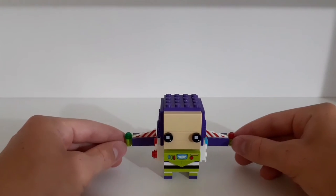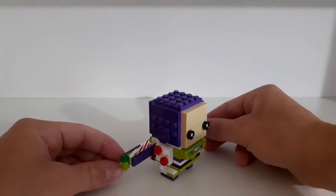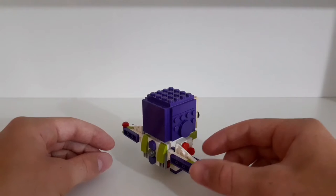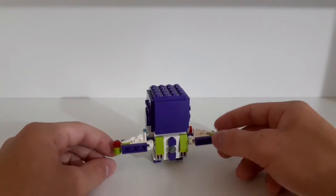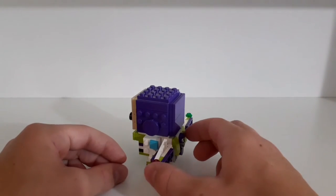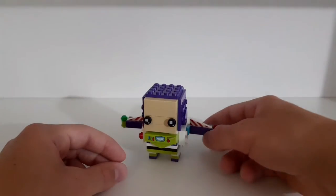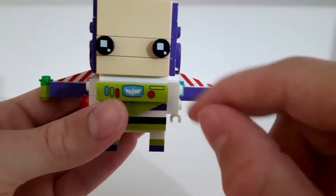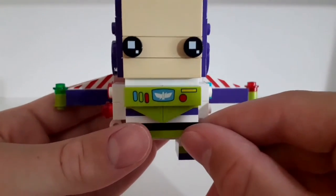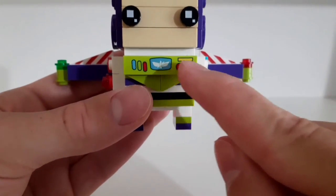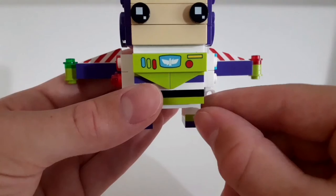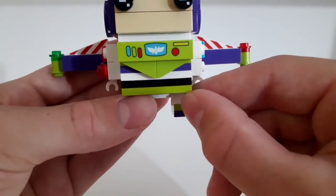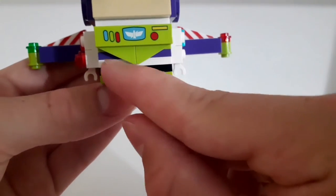And then here we have this amazing BrickHeadz figure of course representing Buzz Lightyear. I think it's really cool, I love the overall look of it and all the cool printed details. Here we have two printed pieces, of course his eyes, and here we have this awesome 1x4 green tile piece with again a bunch of cool details. Here we have some angled plates.